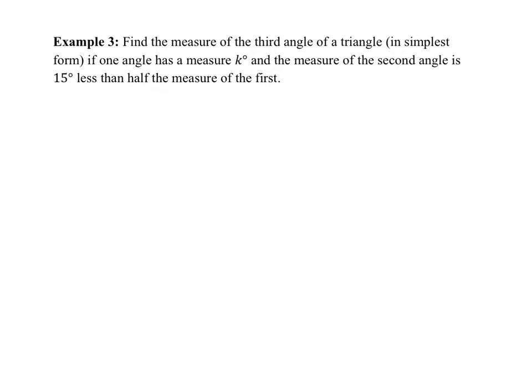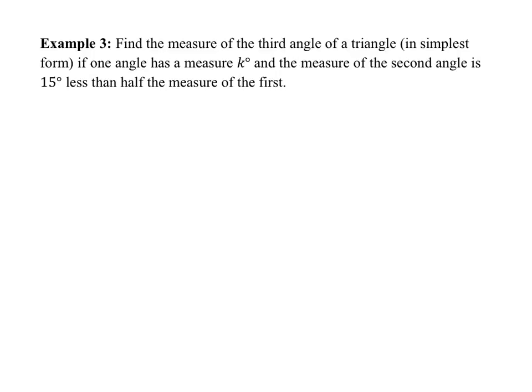Example 3 is a geometry problem. We have a triangle and need to find the measure of the third angle. One angle has measure K, and the second is 15 less than half the measure of the first. The key fact: three angles of a triangle sum to 180 degrees. So angle one plus angle two plus angle three equals 180.